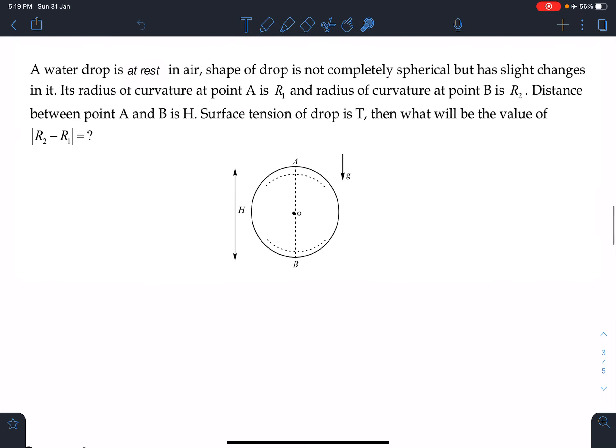Here is the statement of this problem. A water drop is at rest in air. The shape of the drop is not completely spherical but has slight changes in it. Its radius of curvature at point A is R1 and the radius of curvature at point B is R2. The distance between point A and B is H. Surface tension of the drop is T. What will be the value of R2 minus R1? This is what we have to find out.